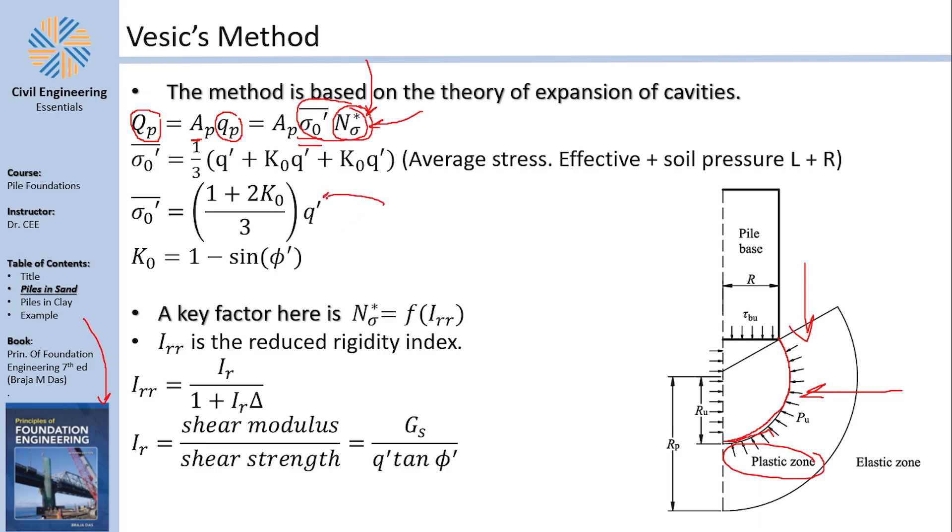What about σ̄? Now the book just throws in this equation but I don't like that. This is basically average stress. When you have a bar above something this basically denotes an average. But average of what? It's the average of the stresses that affect the bearing capacity. It's the vertical stress from the soil and the sideways stress from the soil from the left and the sideways stress from the soil to the right.